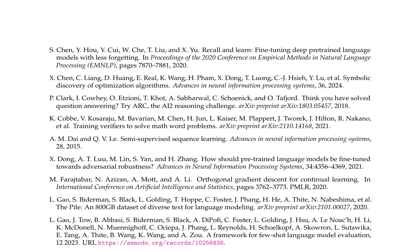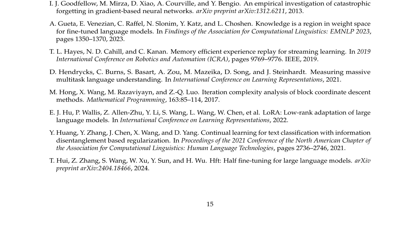The paper discusses the concept of fine-tuning deep pre-trained language models with less forgetting, as proposed by Chen et al. in 2020. This approach addresses catastrophic forgetting where a model forgets previously learned information when trained on new tasks. The authors introduce a method called Recall and Learn, which uses a combination of recall and learning objectives to fine-tune the model while minimizing forgetting. The paper also explores a multitask learning framework allowing the model to learn multiple tasks simultaneously, demonstrating improved performance compared to standard fine-tuning methods.